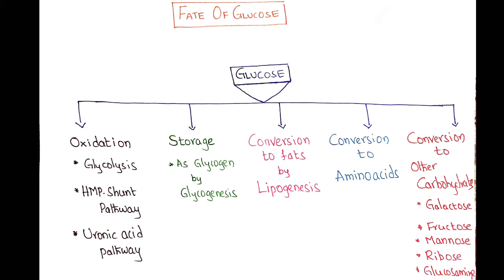Excess glucose is converted into glycogen by glycogenesis, so glucose can be stored as glycogen. However, the storage of glycogen is limited, and because of that, excess glucose will be converted into fats by lipogenesis.